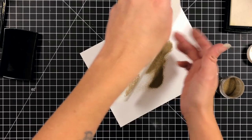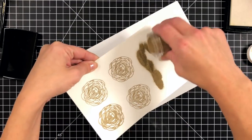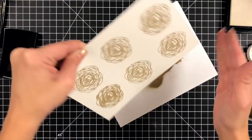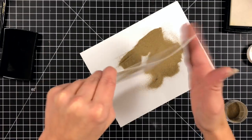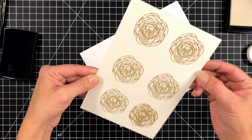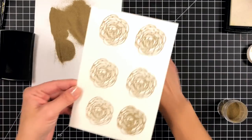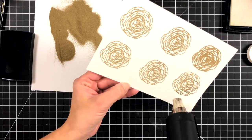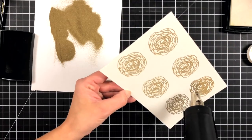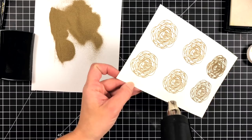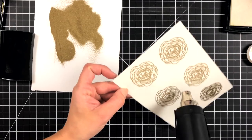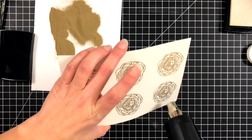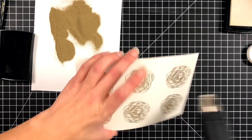Since I did use Versamark ink, it's a clear sticky ink, so all of my embossing powder is going to stick to that. Once those are all covered, I'll take my heat tool. I do have that warming up on the side so it's nice and hot when I take it to my cardstock. That's just going to help eliminate some warping.